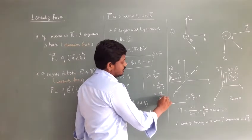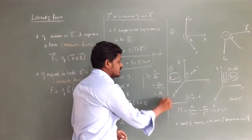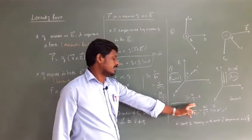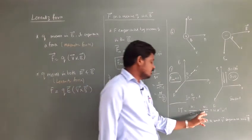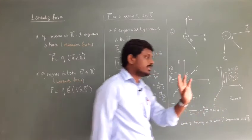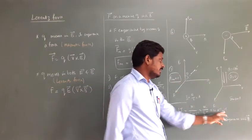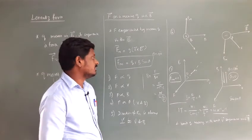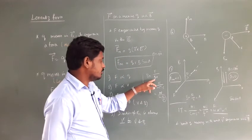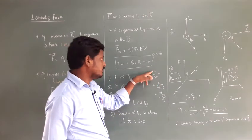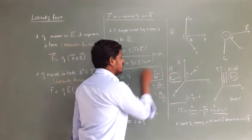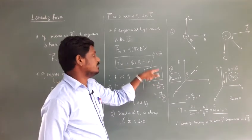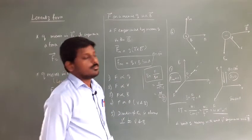Since coulomb per second is ampere (from I = q/t), the unit becomes newton per (ampere × meter), so 1 tesla = N·A⁻¹·m⁻¹. Definition of tesla: one tesla is the magnitude of magnetic field when a unit charge moving with unit velocity experiences a unit force. From B = F/(qv), unit charge having unit velocity and experiencing unit force gives a magnetic field of 1 tesla.